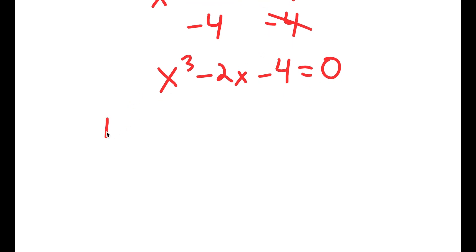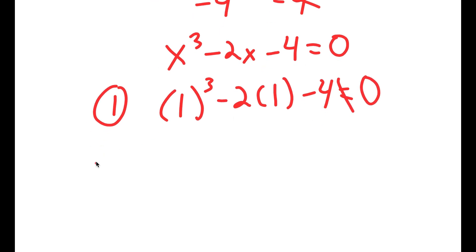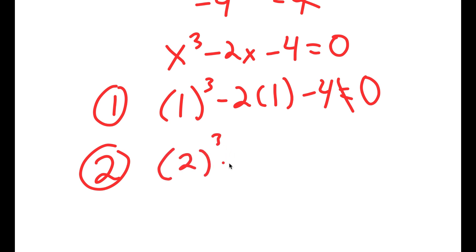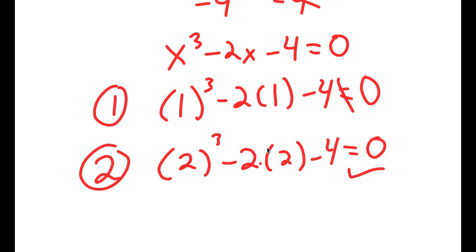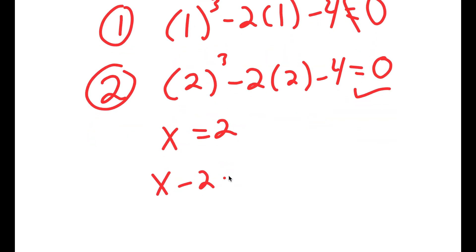Let's start with x equals 1: I get 1 to the power of 3 minus 2 times 1 minus 4, which does not equal 0. Now if x equals 2, I get 2 to the power of 3 minus 2 times 2 minus 4. 2 to the power of 3 is 8. 8 minus 4 is 4, and 4 minus 4 is 0. So this does equal 0, meaning x equals 2 is a solution, so x minus 2 is equal to 0.